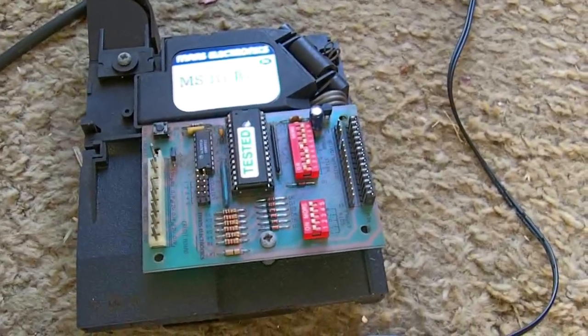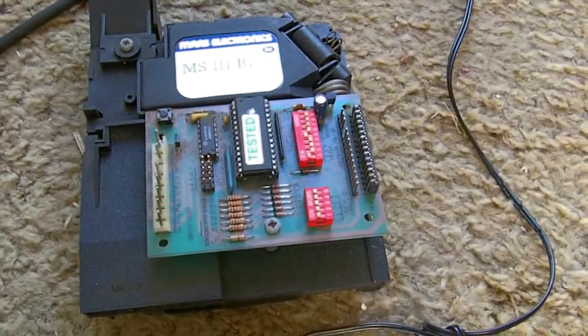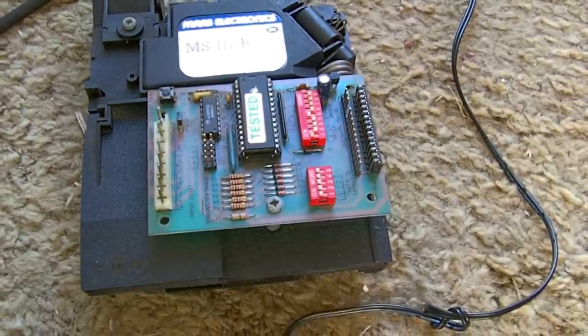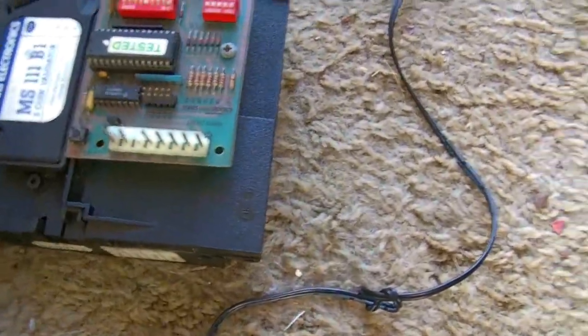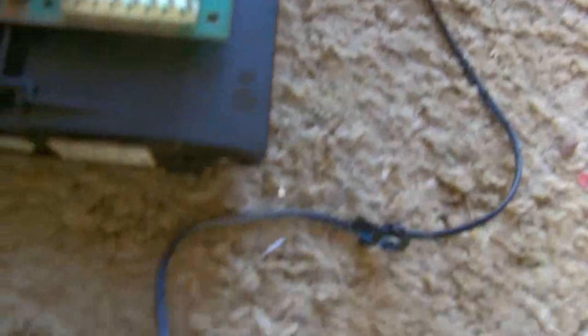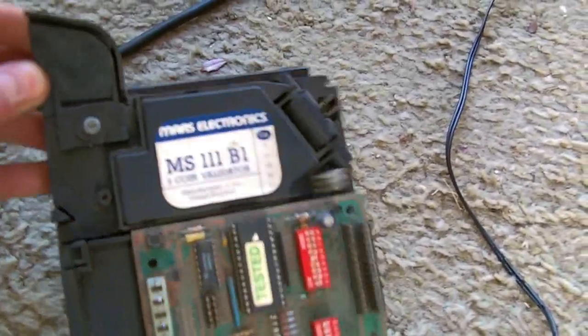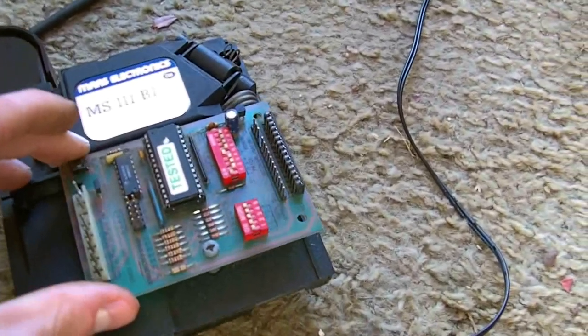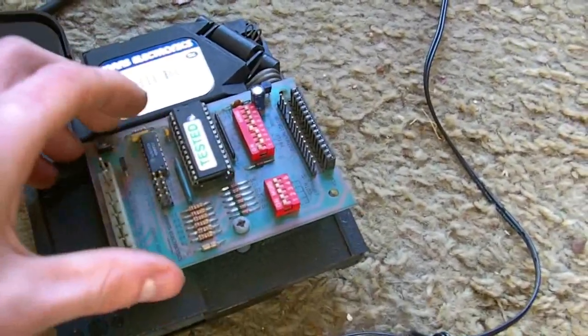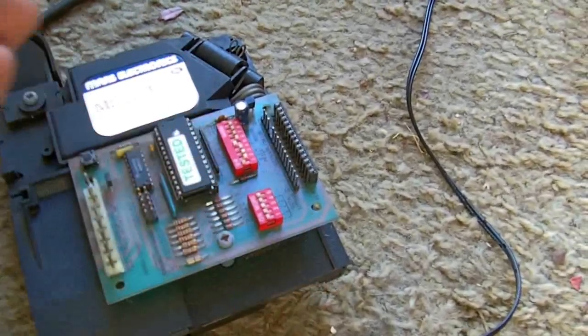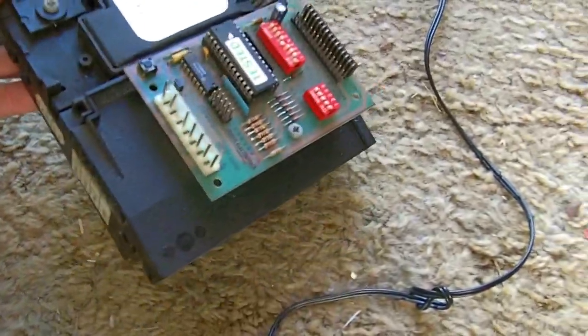You want to put money in, so you're like, right, got the JAMMA harness here, how do I connect this up? Well, if you look at the board itself, you'll have your coin mechanism, the black bit, and then you'll have your credit board which is this circuit board. On some arcades this board itself will be mounted inside the cabinet rather than on the actual mechanism.